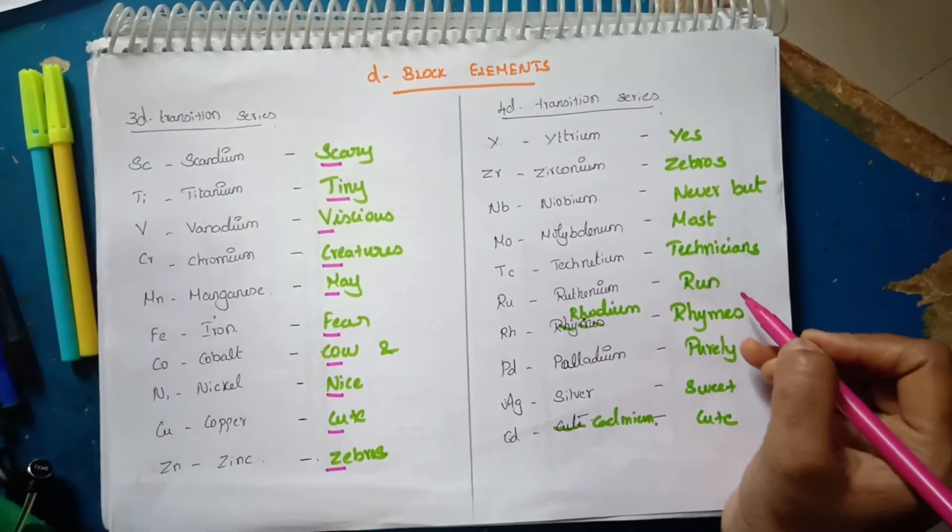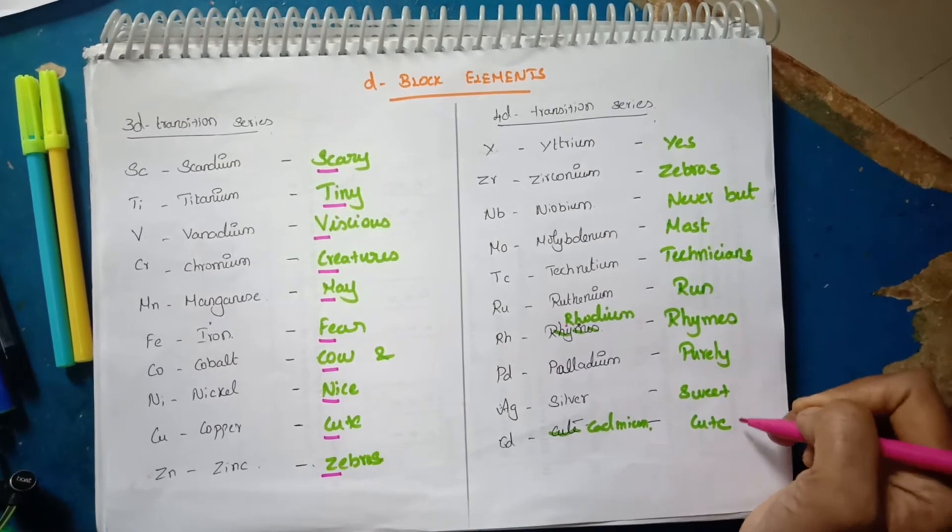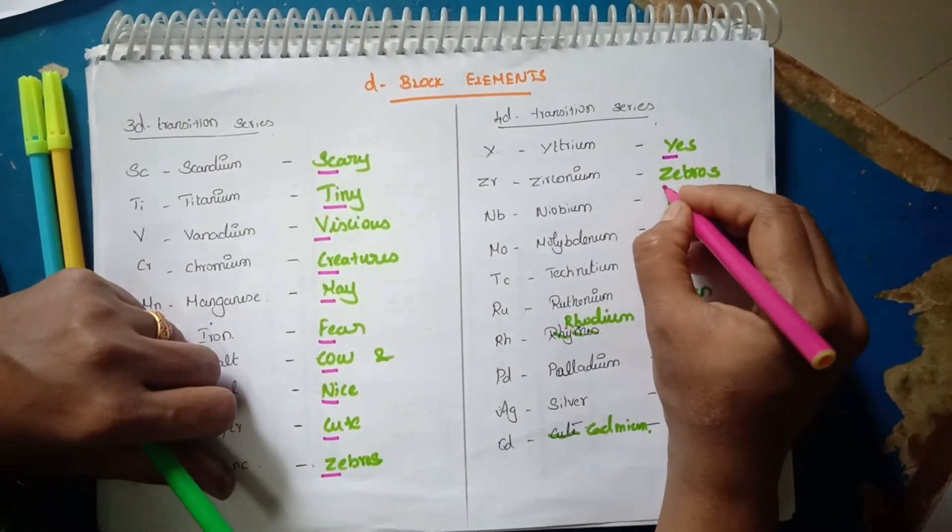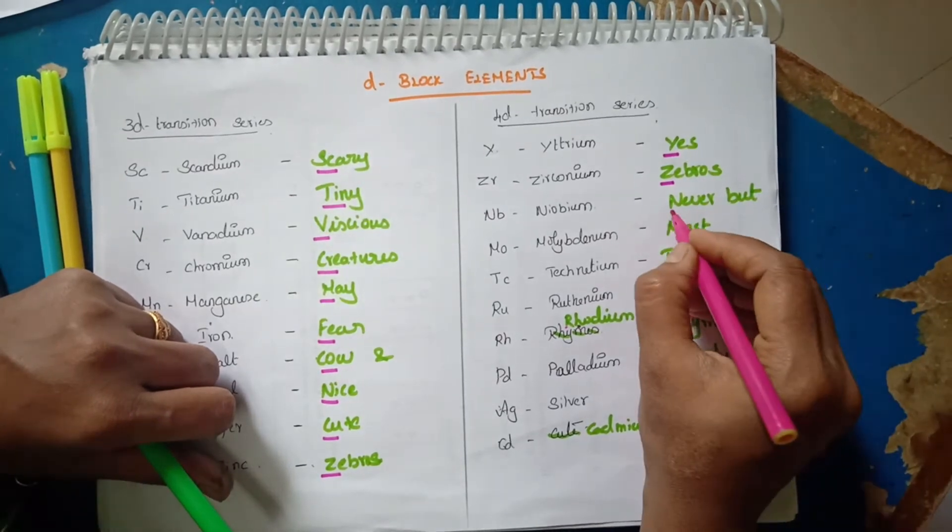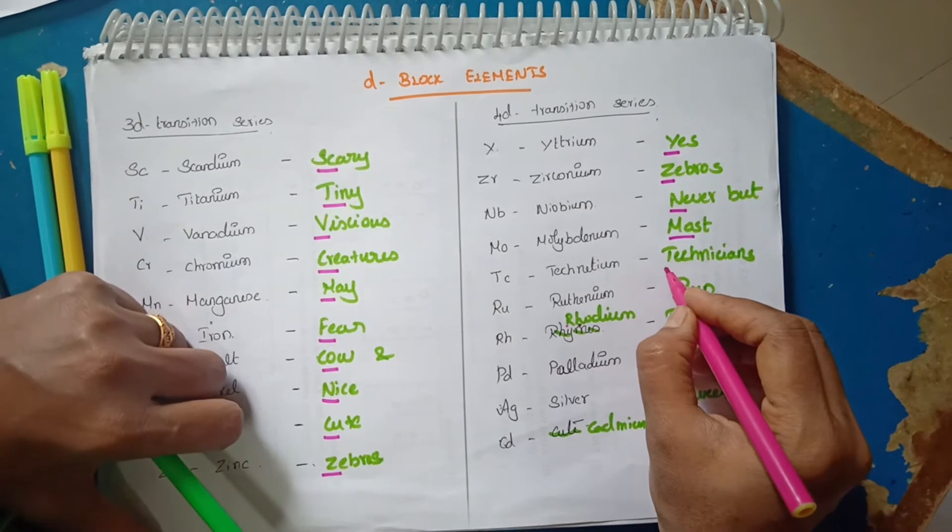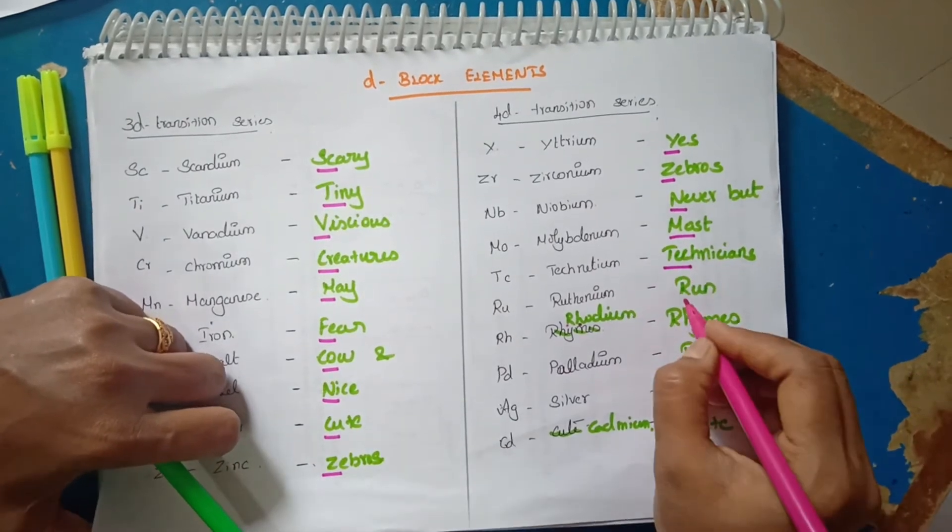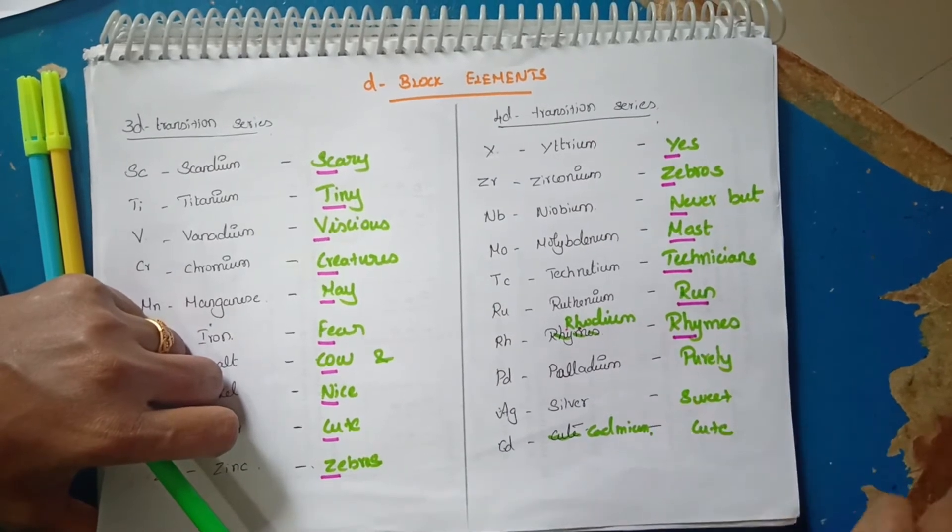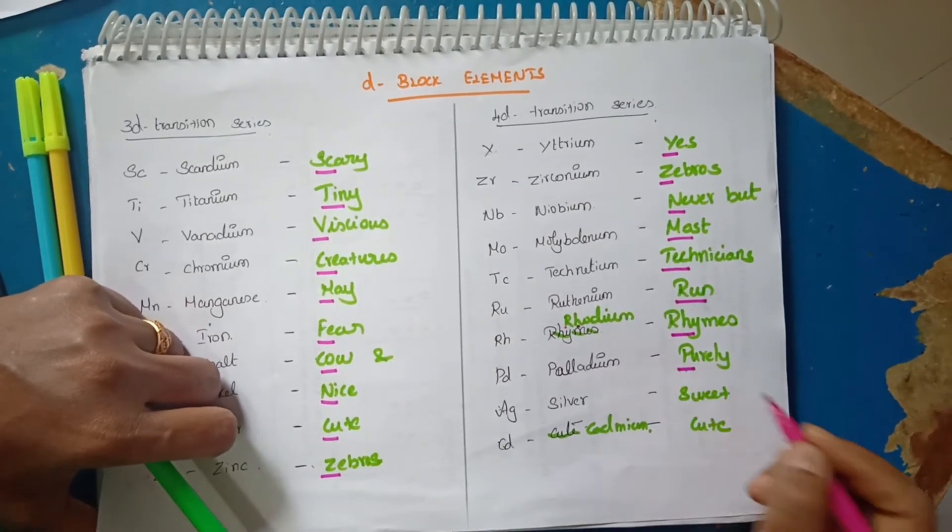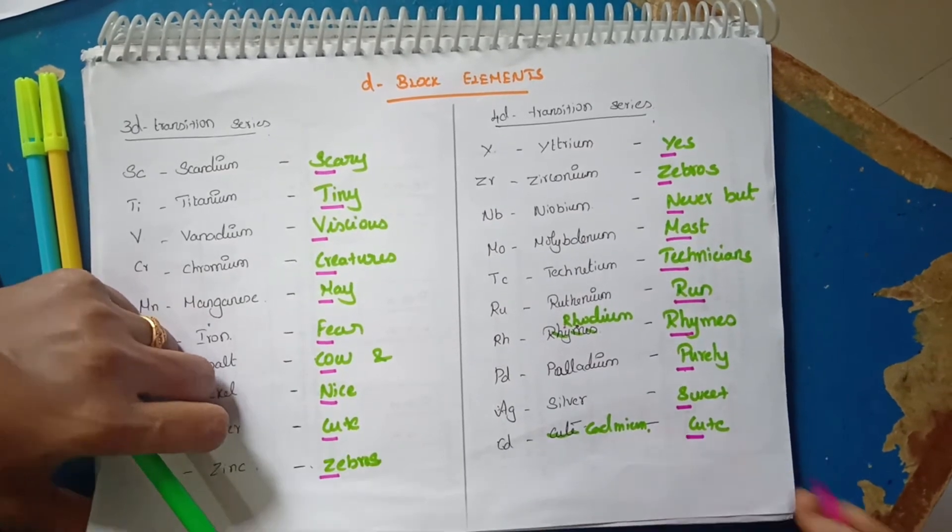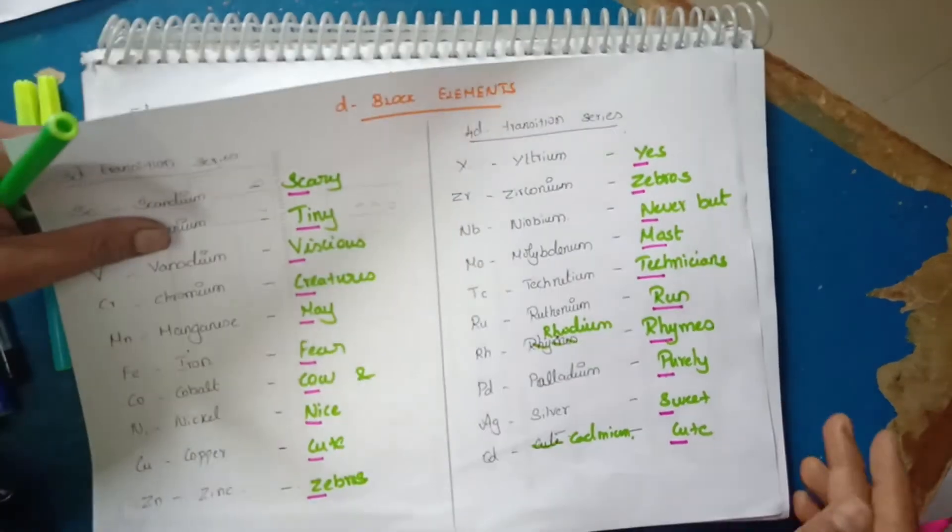So Y indicating Yttrium, Z for Zirconium, N for Niobium, M for Molybdenum, Tc for Technetium, Ru for Ruthenium, Rh for Rhodium, P for Palladium, S for Silver and C for Cadmium.